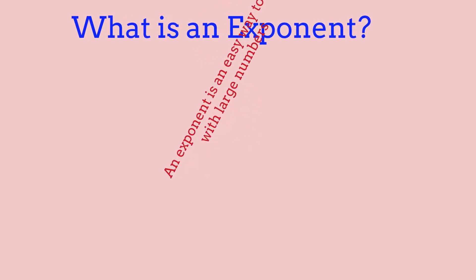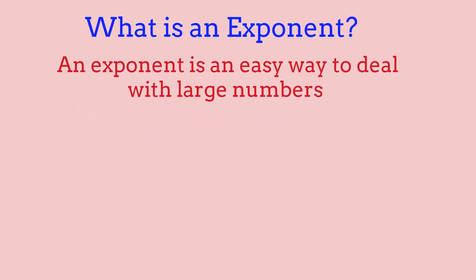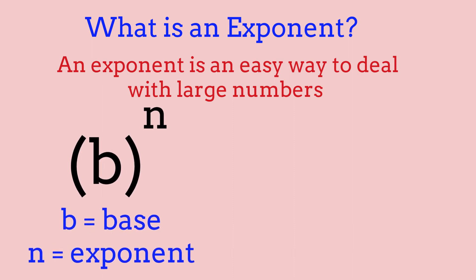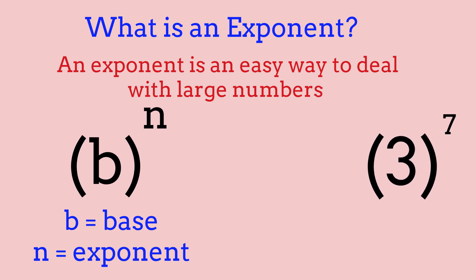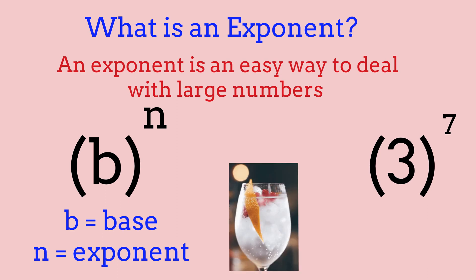So let's get started with what an exponent is. An exponent is an easy way to deal with large numbers. An exponent involves two numbers — first a base, for example b, and the exponent which is n. For example, 3 to the power of 7: 3 is the base and 7 is the exponent. An easy way to remember exponents is by the example of a cocktail umbrella and a drink — the drink inside the glass is the base, and the exponent is the little cocktail umbrella on top.